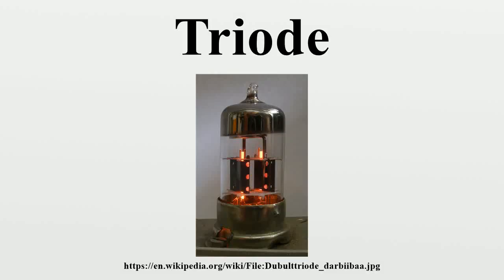A triode is an electronic amplifying vacuum tube consisting of three electrodes inside an evacuated glass envelope: a heated filament or cathode, a grid, and a plate.